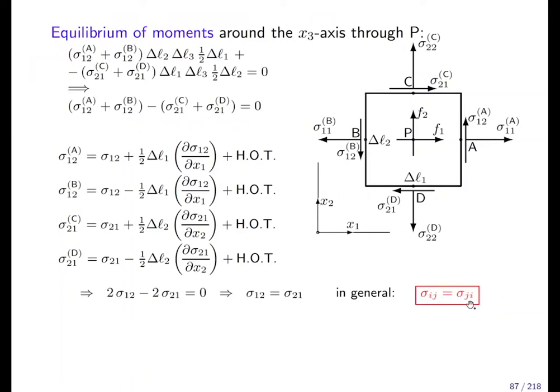At the end of the day, what we get is that σᵢⱼ equals σⱼᵢ, that σ₁₂ equals σ₂₁. The moment equilibrium leads to the symmetry of the stress tensor. That is what this equation here means.